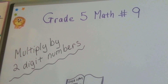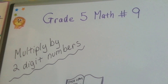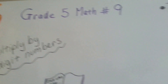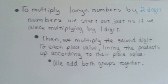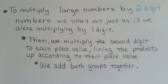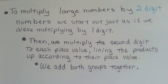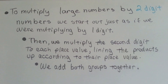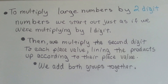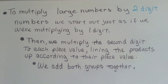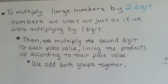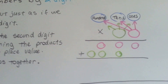Grade 5 math number 9: multiply by two-digit numbers. To multiply large numbers by two-digit numbers, we start out just as if we were multiplying by a one-digit number. Then we multiply the second digit to each place value, lining the products up according to their place value. Then we add both groups together. It looks like this.